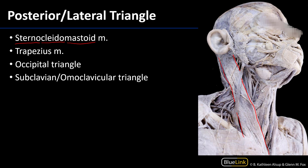The sternocleidomastoid muscle has two inferior attachments: the manubrium of the sternum, which is just a little out of frame, and the medial third of the clavicle. So there are two distinct attachments there. The SCM runs superiorly and has one major superior attachment, which is the mastoid process of the temporal bone, and also posteriorly it inserts a little bit on the superior nuchal line as well.